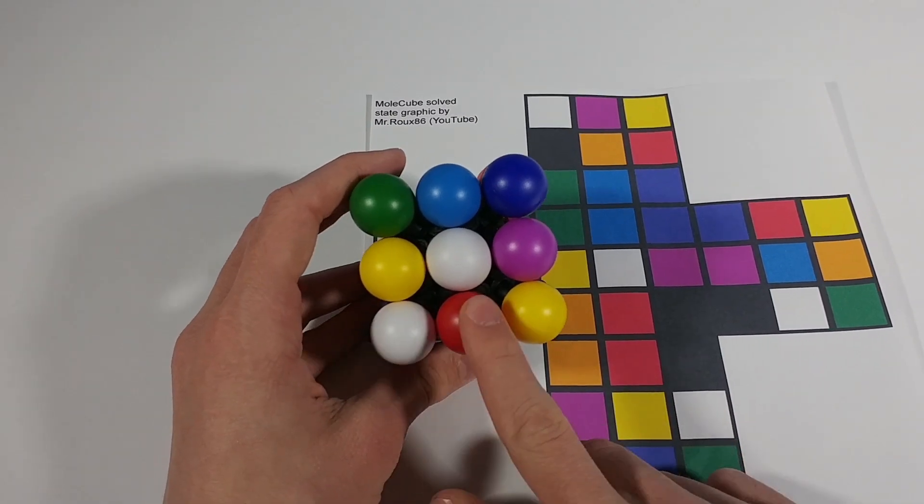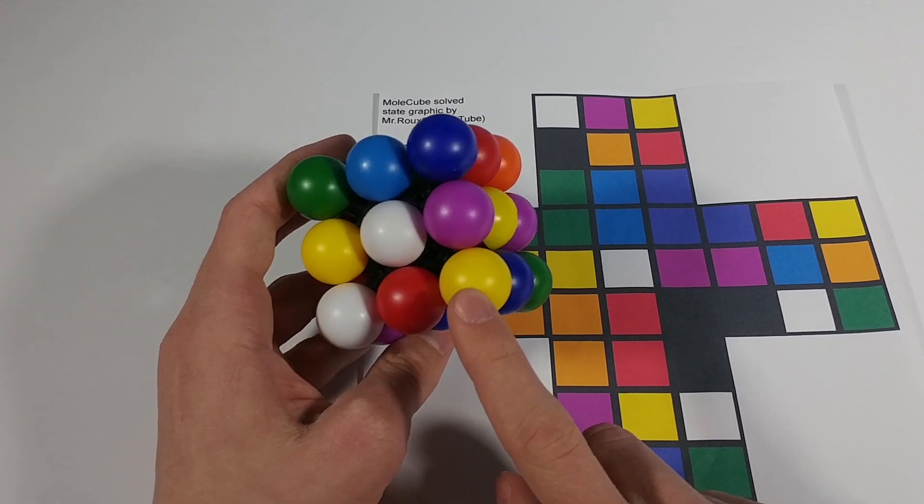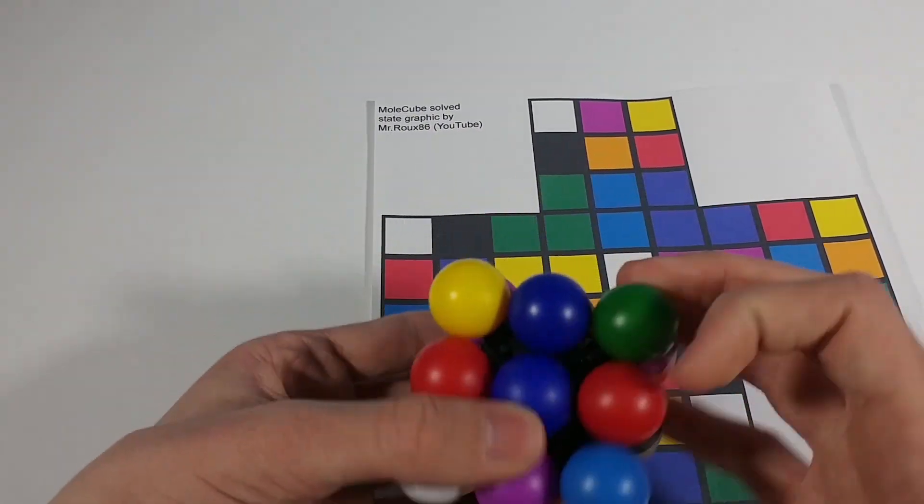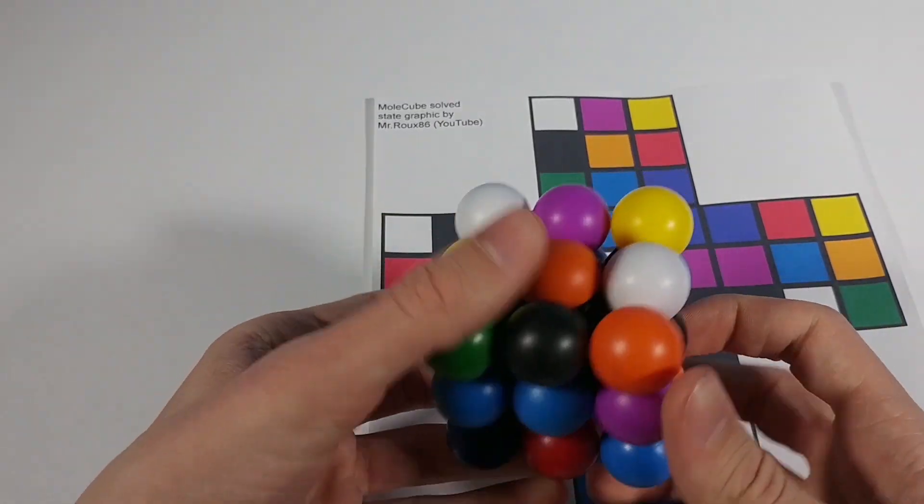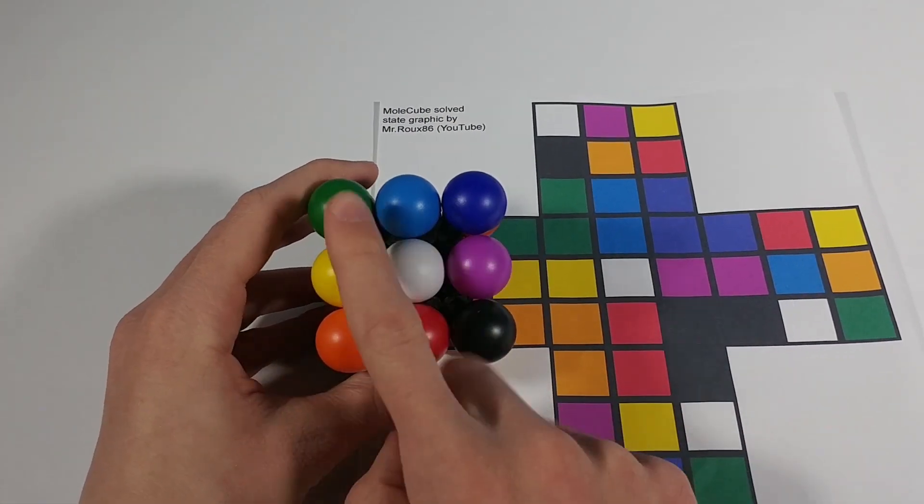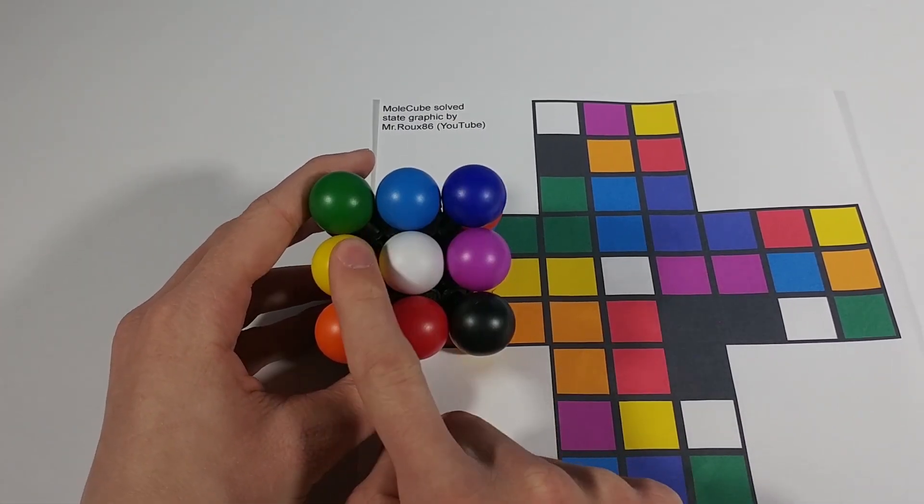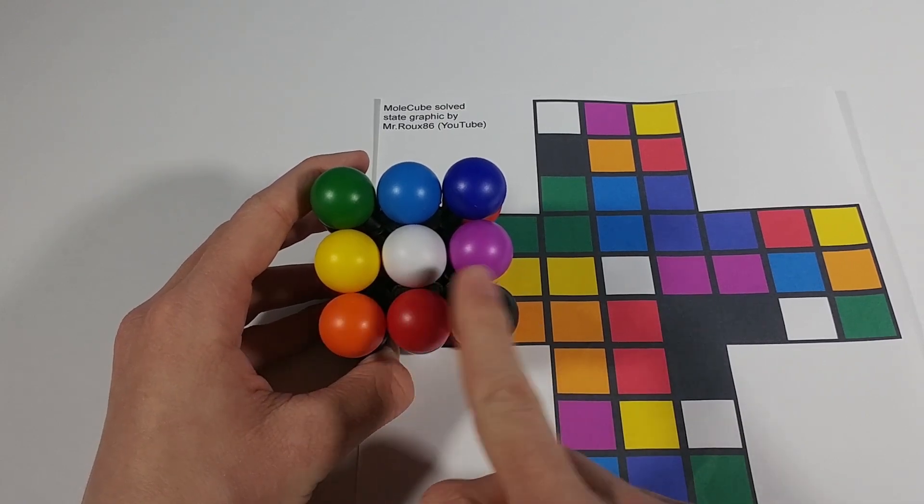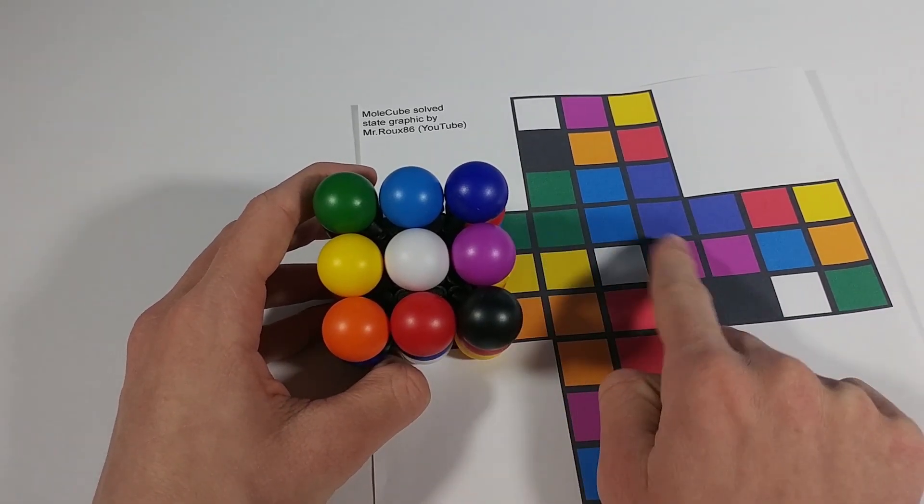Then I need an orange, a red already solved and a black. So if we take a look green, light blue, dark blue, yellow, purple, orange, red, black and that matches as follows.